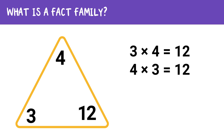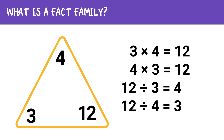Now here's where it gets interesting. We can also use these two numbers to make two division facts. If we know 3 times 4 is 12, we can also say that 12 divided by 3 is 4, and 12 divided by 4 equals 3. Pretty cool, right?